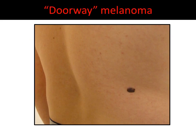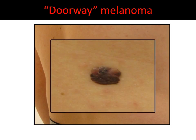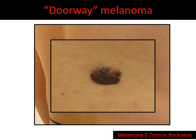Here's another example of a doorway melanoma. This plaque is an obvious outlier on the patient's skin. On close-up look, it shows multiple colors and asymmetric shape. This doorway melanoma is 0.7 mm in thickness.